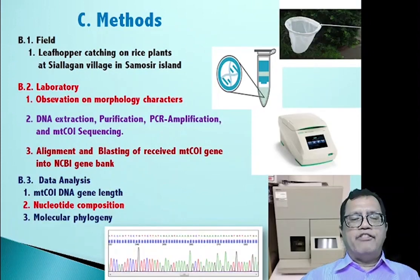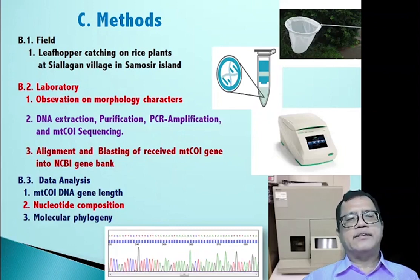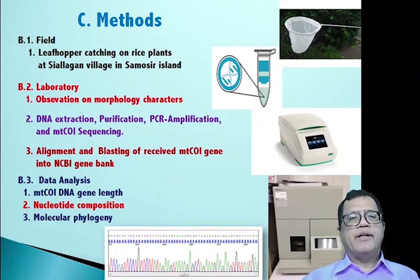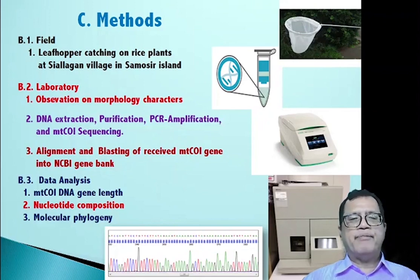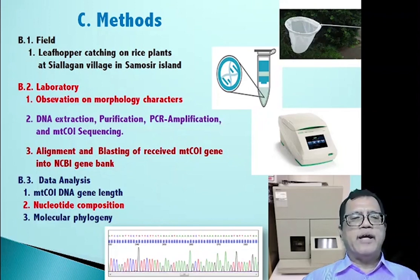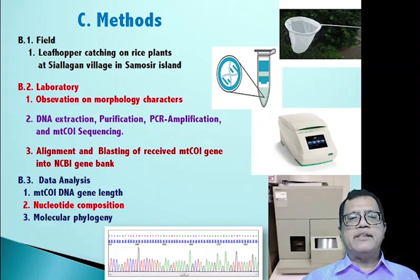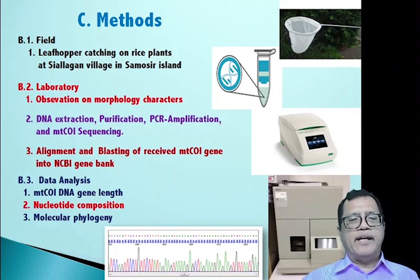The methods in our investigation consist of activities in the field, in the laboratory, and data analysis. In the field, we collected leafhoppers using an insect net. In the laboratory, the first step was observing the morphology characteristics of white leafhopper under a microscope. The second step involved DNA extraction, DNA purification, PCR amplification using specific primers, and MTC01 sequencing. The third step was alignment and blasting of the MTC01 gene into the NCBI GenBank. The data analysis consists of MTC01 DNA gene length, nucleotide composition, and molecular phylogeny.